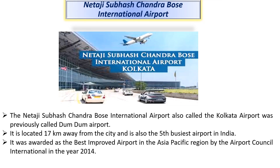The next international airport is Netaji Subhash Chandra Bose international airport, also called the Kolkata airport. It was previously called Dum Dum airport. It is located 17 km away from the city and is the 5th busiest airport in India.